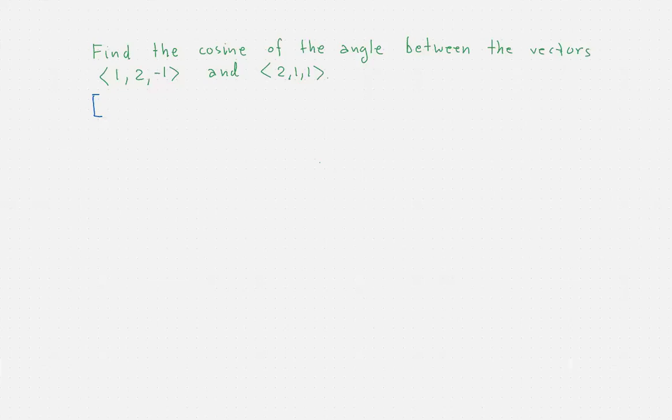We would like to find the cosine of the angle between the vectors (1, 2, -1) and (2, 1, 1).